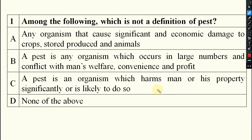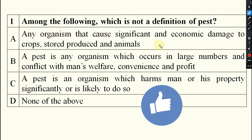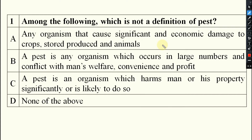Your first question is: among the following, which is not a definition of pest? Some definitions we discussed in the theory class. Any organism that causes significant economic damage to crops, stored produce, and animals is a pest. A pest is any organism which occurs in large numbers and conflicts with man's welfare, convenience, and profit. A pest is an organism which harms man or his property significantly or is likely to do so.